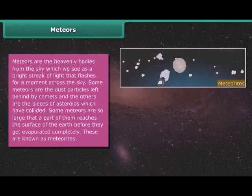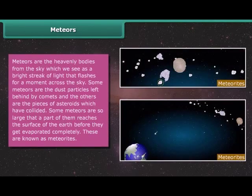Meteors are the heavenly bodies from the sky which we see as a bright streak of light that flashes for a moment across the sky. Some meteors are the dust particles left behind by comets and the others are the pieces of asteroids which have collided. Some meteors are so large that a part of them reaches the surface of the earth before they get evaporated completely. These are known as meteoroids.